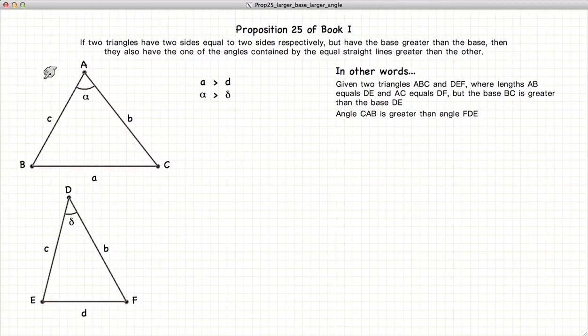This states that if you have two triangles where two of the sides are equal, c equals c and b equals b, if the base of one triangle, in this case a, is larger than the base of a second triangle, in this case d, that means that the angle alpha will be larger than the angle delta.